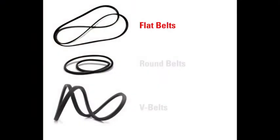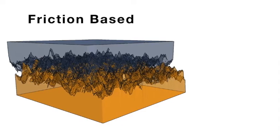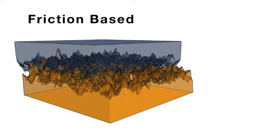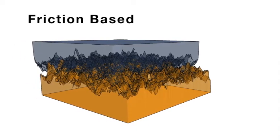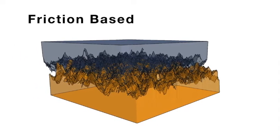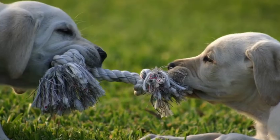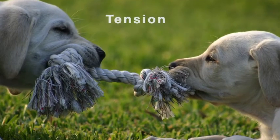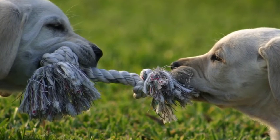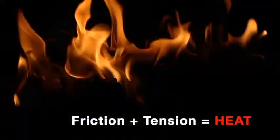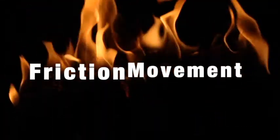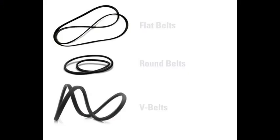Whether flat, round, or V-shaped, these belts are all friction-based. These belt drives require friction between the belt and pulley to transmit movement, as well as a considerable amount of tension to produce high friction. The by-product of high friction is heat. Friction along with movement and heat equals wear. These three systems are less efficient than typical toothed belt and pulley systems.